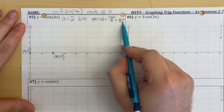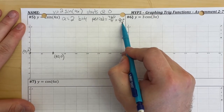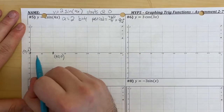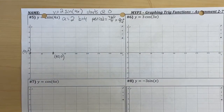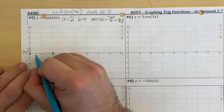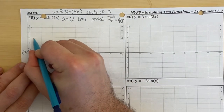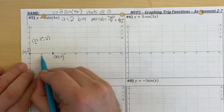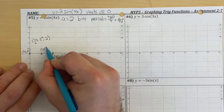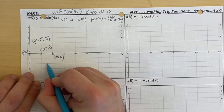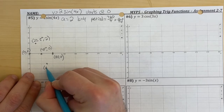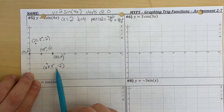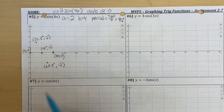I take 90 degrees divided by 4, like one of the examples in the classwork. My next point is 22.5 degrees. So in between 0 and 45, I have 22.5 degrees with y value of 2. I go to 45 degrees and my y value is 0. I go over to 67.5 degrees and my y value is negative 2.